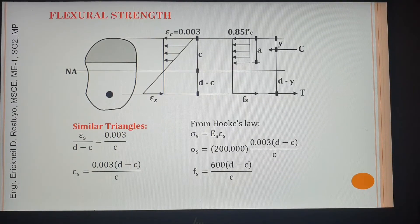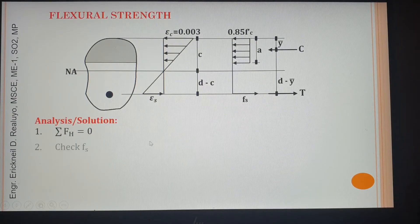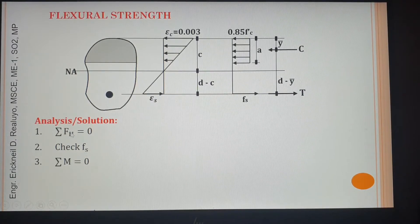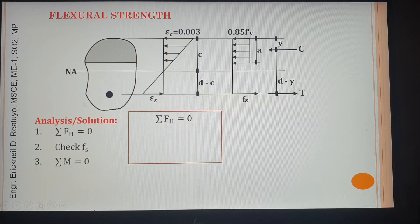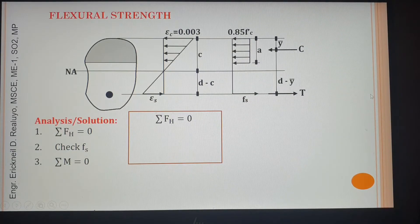RC beam problems are very easy because all we need to do are three things: take summation of horizontal forces equal to zero, check fs, and lastly, take the summation of moments. This is the general approach. Since the beam is subjected to two forces and should be in equilibrium, the summation of forces equals zero — forces directed left equal forces directed right, so C equals T.